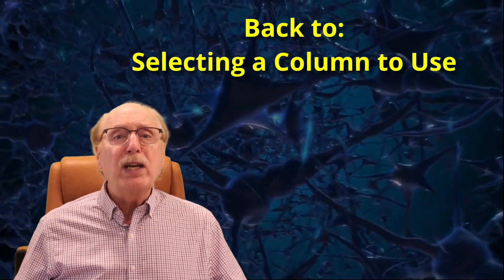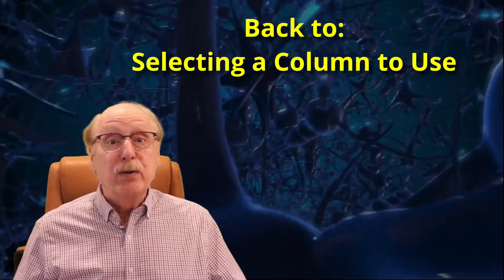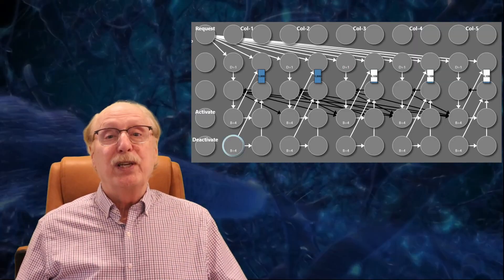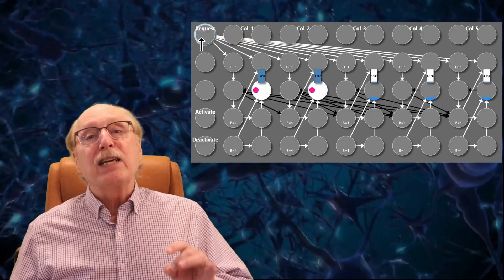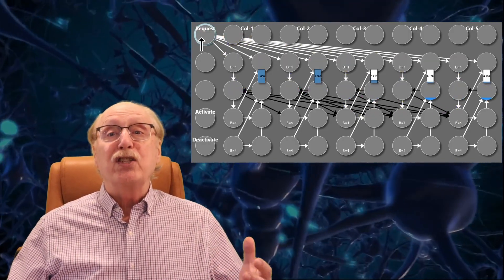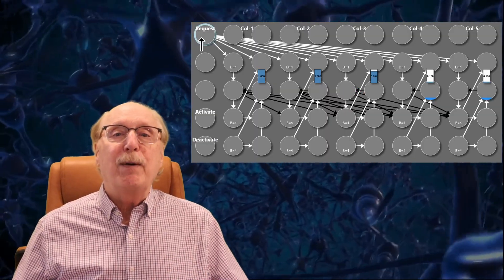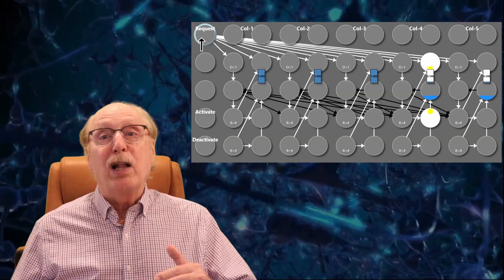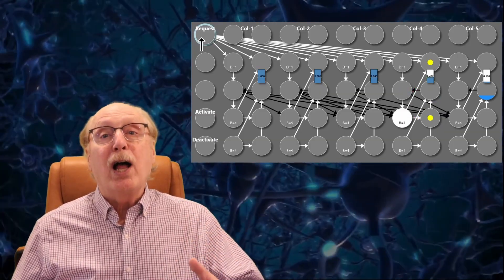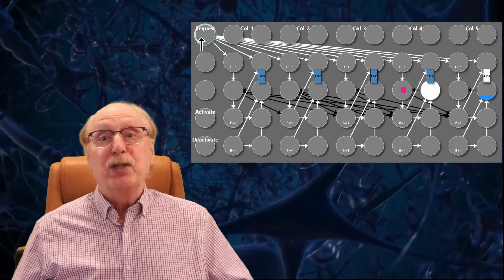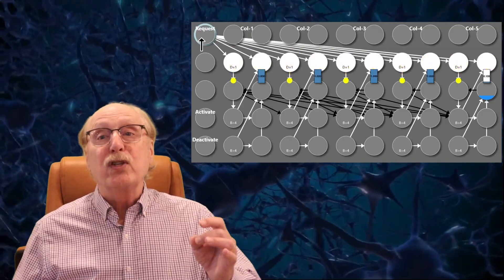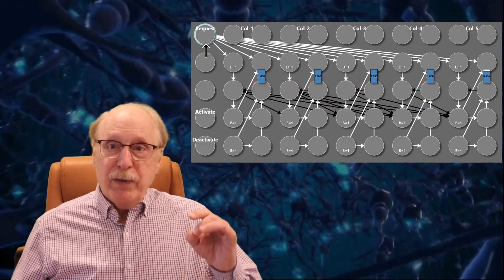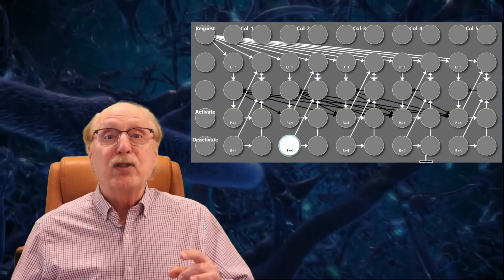Now back to the big question. How does the brain choose which available column to use? Here's how this circuit works. When the request signal comes in, imagine it comes from the hippocampus, it has to activate the first available column and suppress all the others. This happens through a clever combination of timing and inhibition. First, the request signal is routed so that all columns receive it at the same time. Then each column checks its own in-use synapse. If the synapse says the column is already in use, the signal gets blocked by an inhibitory synapse shown in black in this simulation. If the column is available, the signal propagates onward, and here's the clever part.